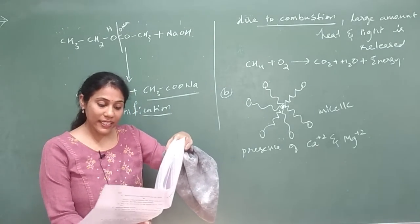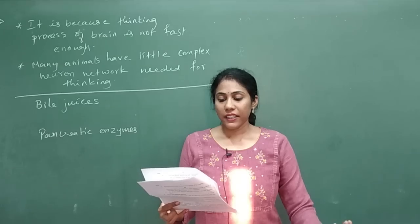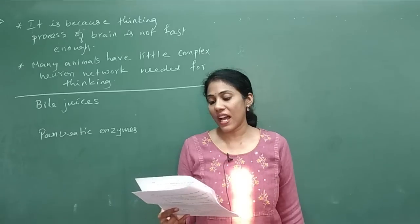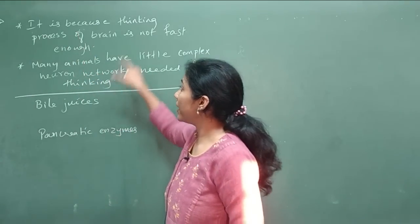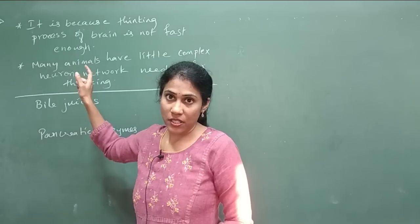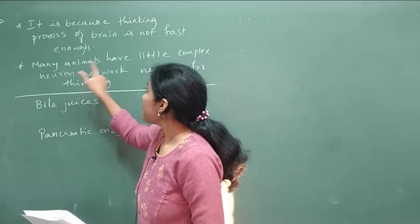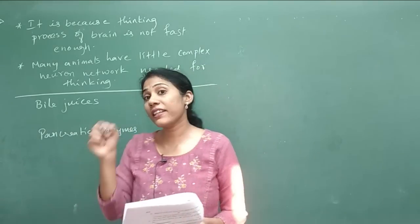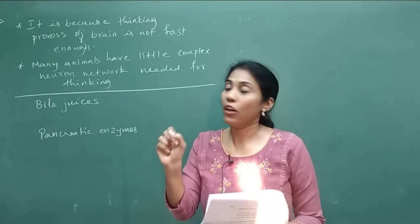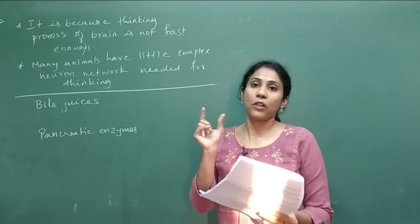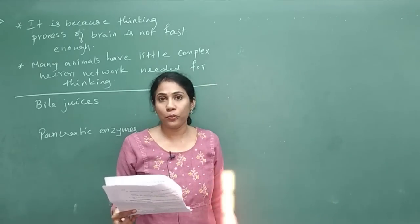Now moving to biology — Part C. Question 32 is from the control and coordination chapter: the functioning of reflex arc is more efficient than the thinking process of the brain — clarify with scientific explanation. Two points: first, reflex actions are more evolved because the thinking process of the brain is not fast enough. Second, many animals have a simple neuron network that requires much thinking, so reflex arcs bypass the brain for quick responses.